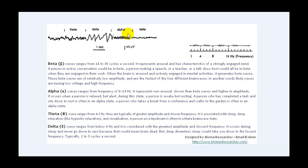The third type of waves is called the theta wave. It ranges from 4 to 7 hertz. It is typically having a greater amplitude and slower frequency. It is associated with sleep, deep relaxation and visualization. A person on a daydream is often on a theta brain wave state.